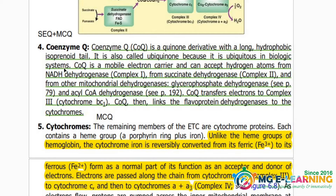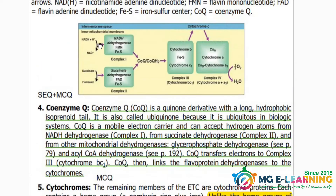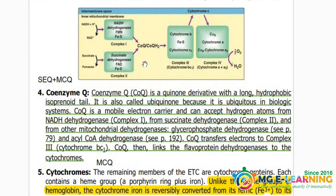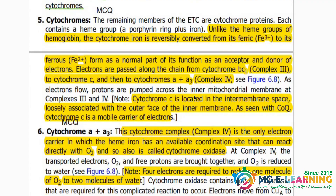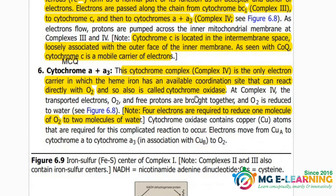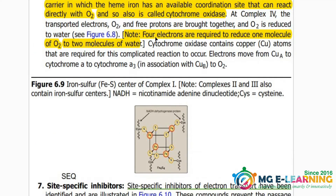Coenzyme Q — you have to know about it; it is very important for MCQ. You should know from which structures coenzyme Q receives electrons. Cytochrome c and cytochrome a and a3 — where they are present — is important for MCQ. Four electrons are required to reduce one molecule of oxygen to two molecules of water; this is important for MCQ.